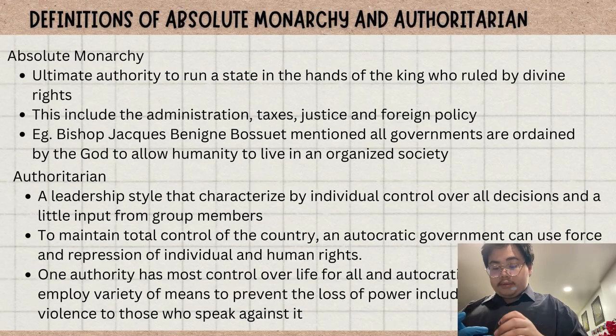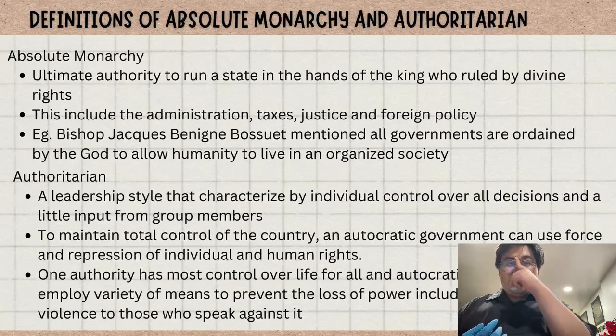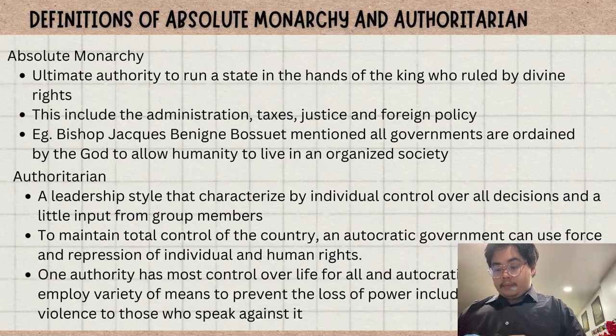To maintain total control of the country, the autocratic government will use force and repression of individual and human rights, as we can see in China and North Korea. One authority has mass control over life, and autocratic leaders can employ a variety of means to prevent the loss of power. The loss of power means the loss of governing the country, including threats of violence to those who speak against it.